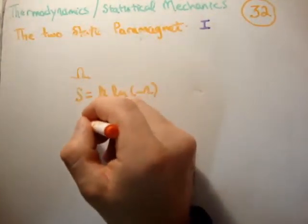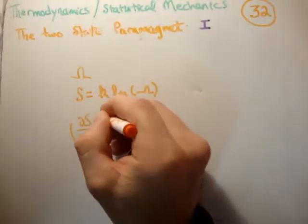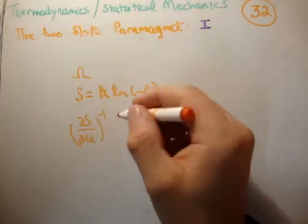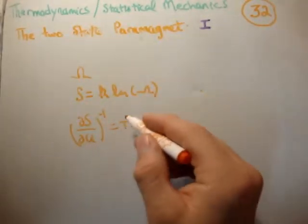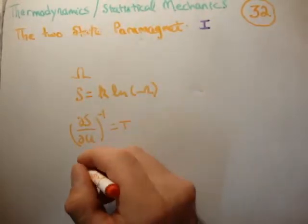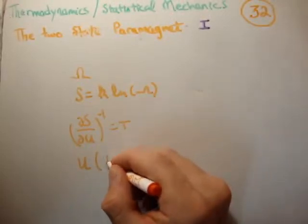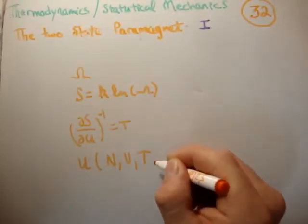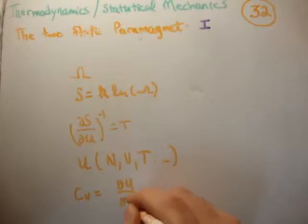Then we plot our entropy versus energy graphs. We know that dS/dU, or the inverse of the slope of our entropy versus energy graph, is equal to temperature. Once we have temperature, energy, and entropy, we're able to get the functional form of our energy in terms of the number of particles, volume, temperature, and so on. The heat capacity is then easily calculated as dU/dT at constant N and constant V.